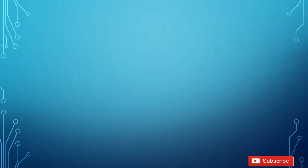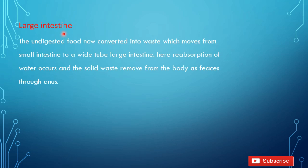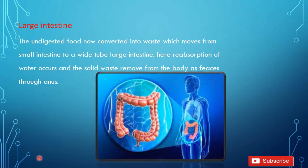Next one is Large Intestine. From the small intestine, food passes into the large intestine. The undigested food is converted into waste, which moves from the small intestine into the wide tube of the large intestine. Here reabsorption of water occurs and solid waste is removed from the body as feces through the anus. The large intestine is the last part of the alimentary canal. You can see here its position.